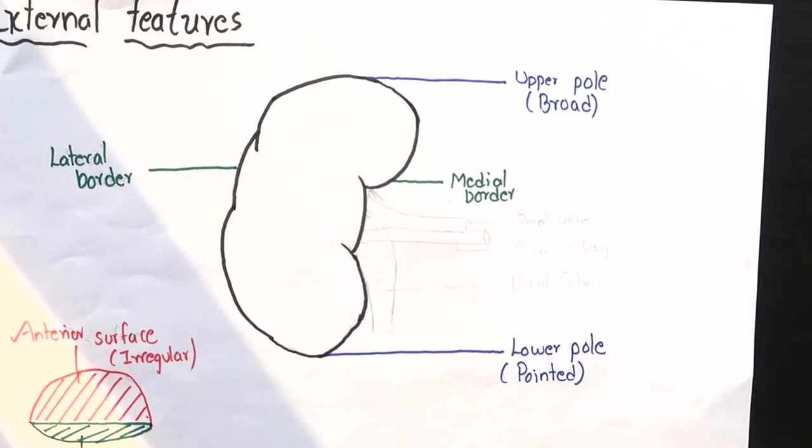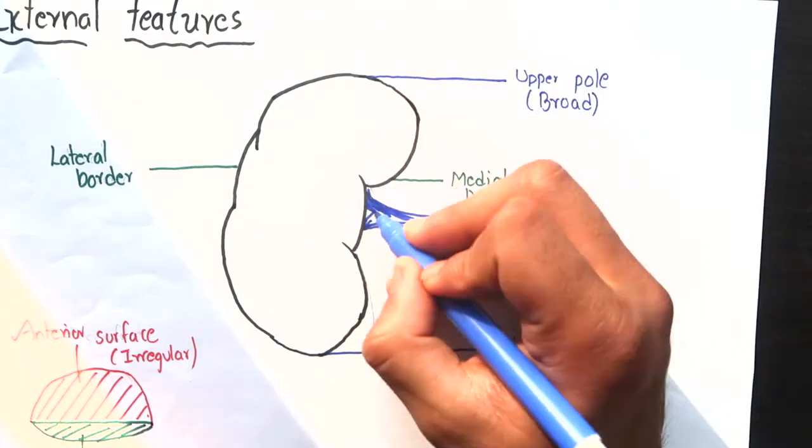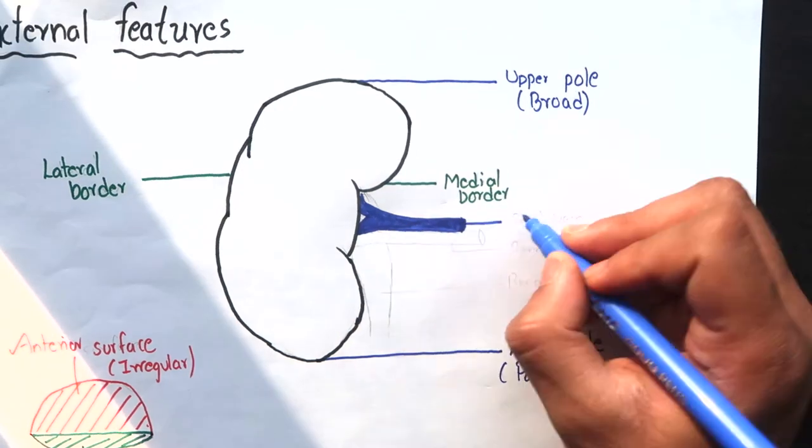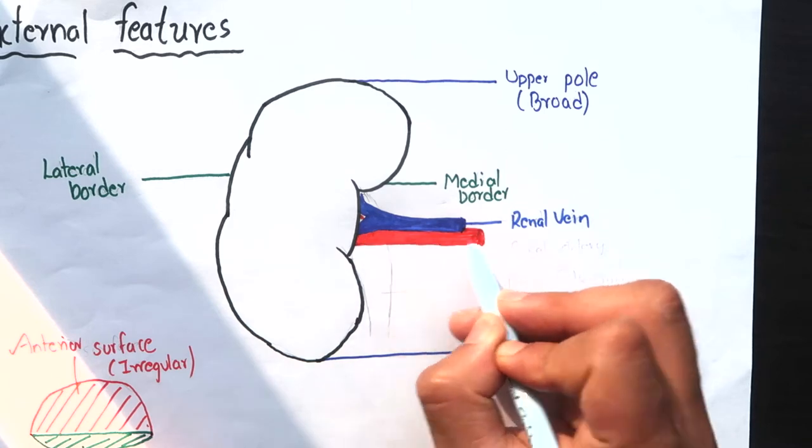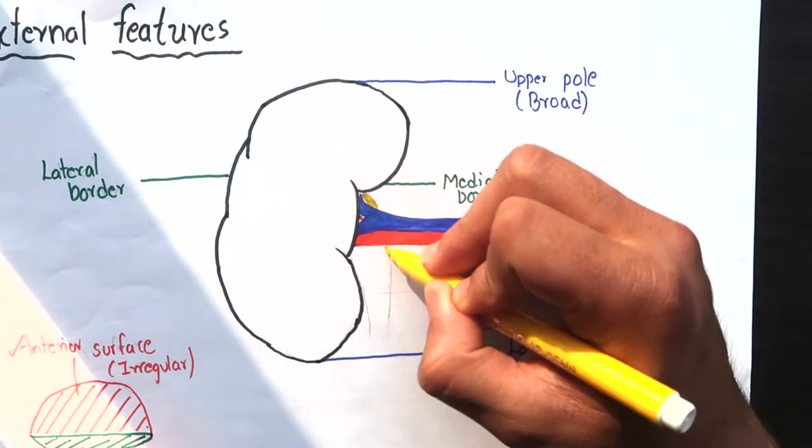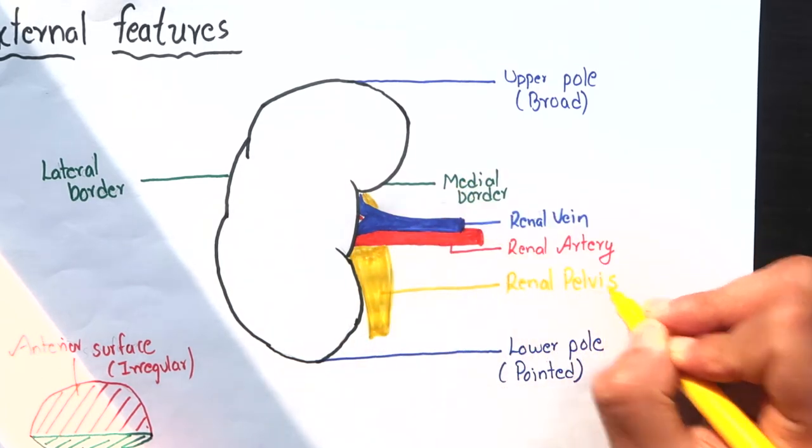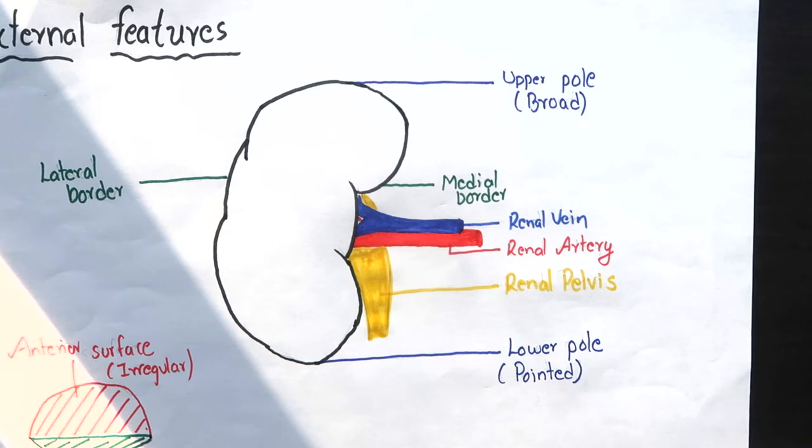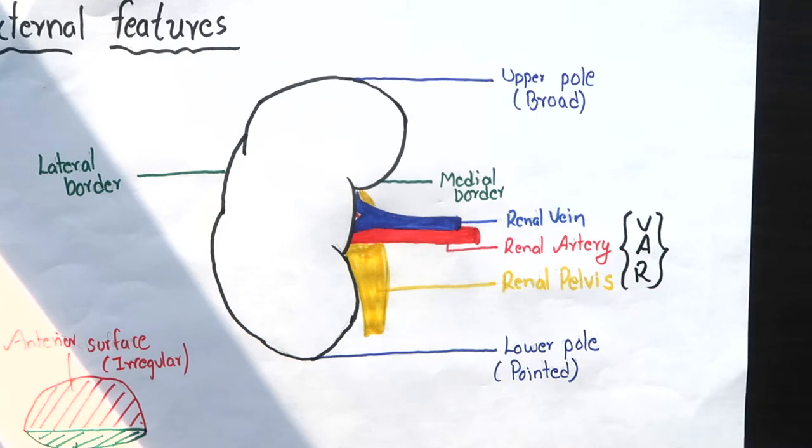So a better way to do this is to examine the structures present in the hilum as I'll describe them now. The anterior most structure in the hilum is the renal vein. Behind the renal vein is the renal artery. And the posterior most structure is the renal pelvis which continues down below as ureter. You can remember this as VAR from anterior to posterior.